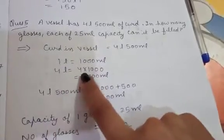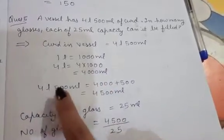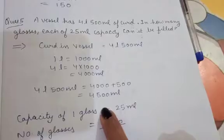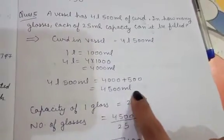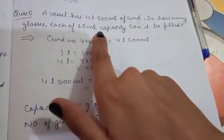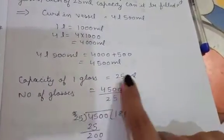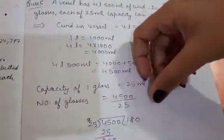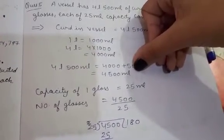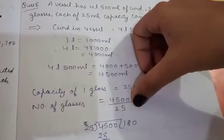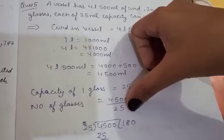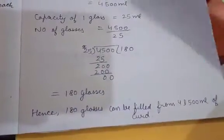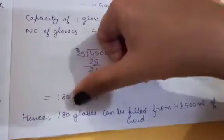We convert 4 liters to milliliters: 4 × 1000 = 4000 milliliters. So 4 liters 500 milliliters equals 4000 + 500 = 4500 milliliters. We convert to milliliters because the glass capacity is given in milliliters. The capacity of one glass is 25 milliliters. Dividing 4500 by 25 gives 180. So 180 glasses can be filled from 4 liters 500 milliliters of curd.